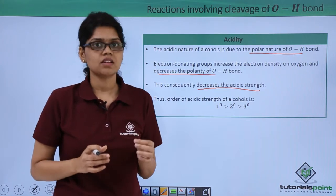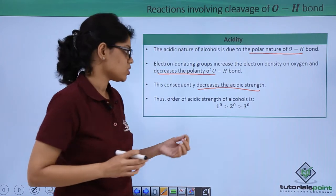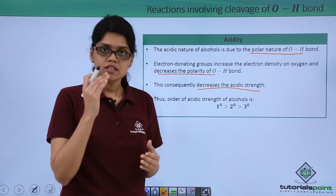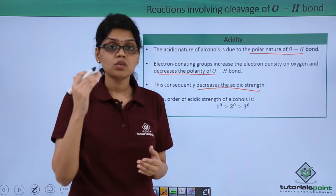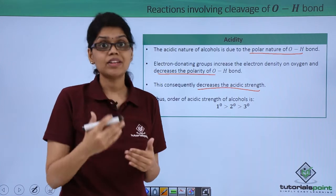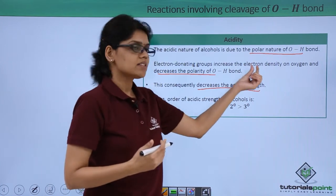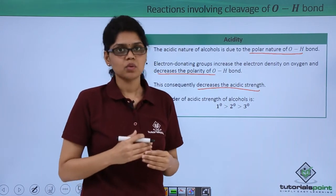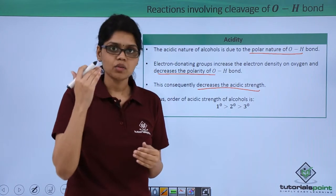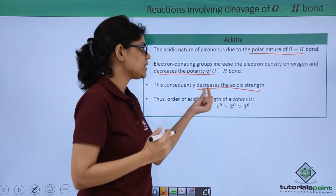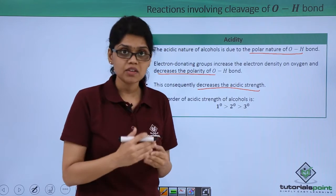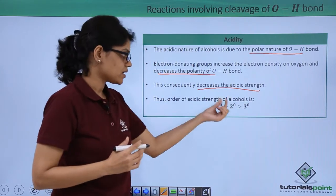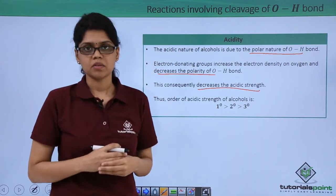Because of this, the order of acidity of various alcohols is: primary greater than secondary greater than tertiary. In tertiary alcohol, you have three electron-donating alkyl groups which heavily increase the electron density on the oxygen atom and decrease the polarity of the OH bond. Since the polarity of the OH bond decreases, the acidic strength decreases, and therefore tertiary alcohols are much less acidic compared to secondary, which are less acidic compared to primary.